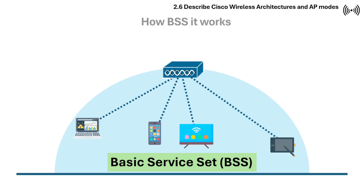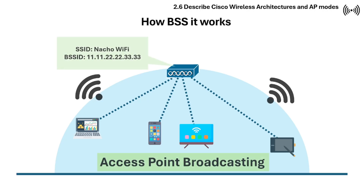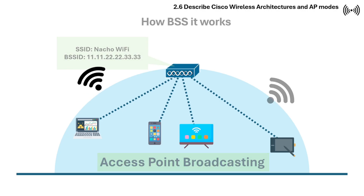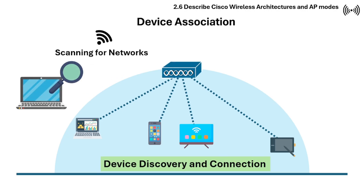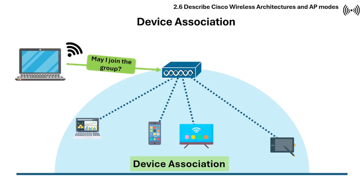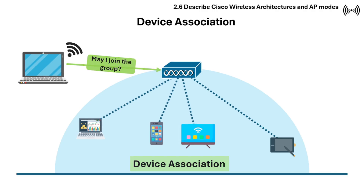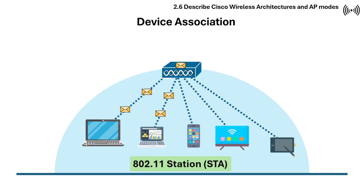This is how BSS works. First, the access point broadcasts its SSID and BSSID to make the network discoverable. Wireless devices scan for available networks and attempt to connect to the desired BSS. Before joining the BSS, a device must request permission from the access point, and this process is called association. Once connected, the device becomes a client, also known as an 802.11 station or STA, and devices communicate with each other through the access point.